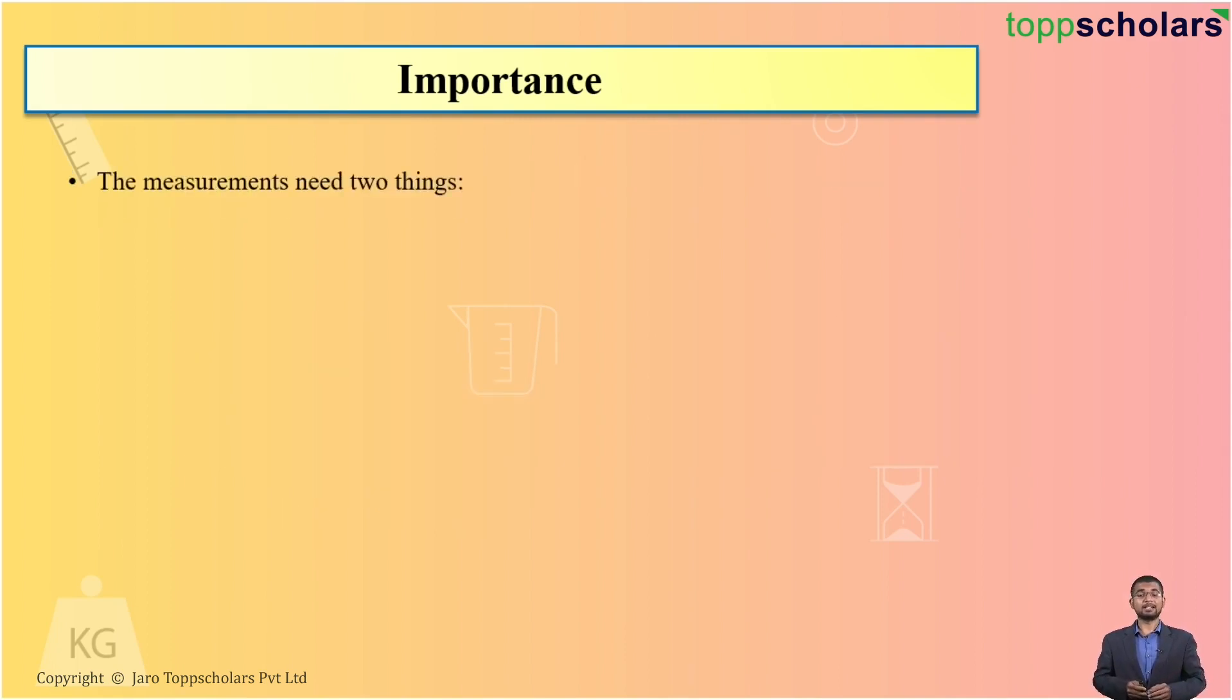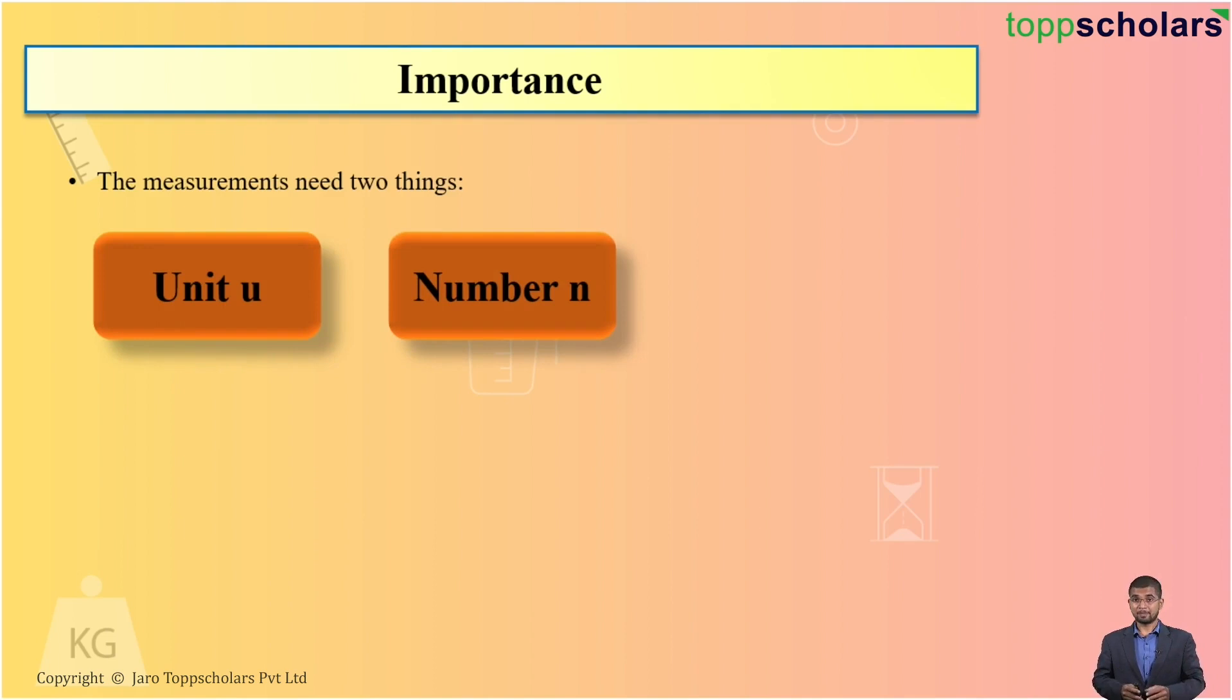That means, this measurement needs two things. First, it needs the unit and second, it needs the number n. This number n students is known as the magnitude. And unit as we know can be any unit for length, mass and time.